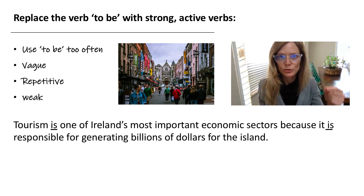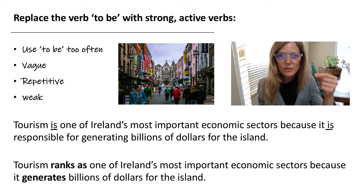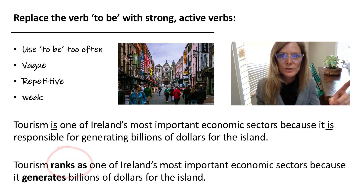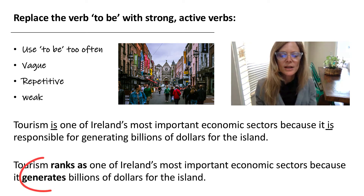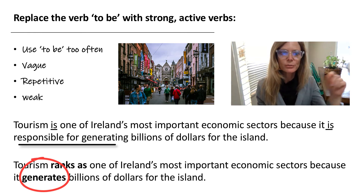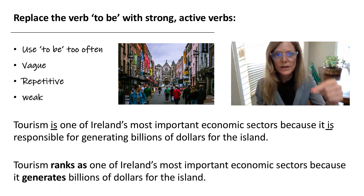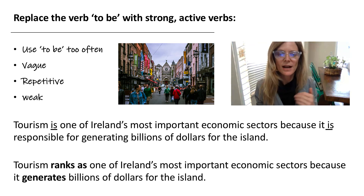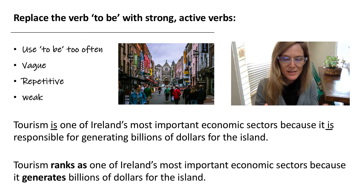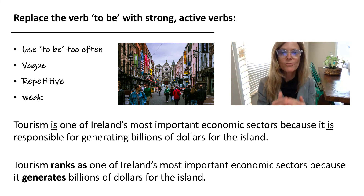Let's make this stronger. What we did with the first verb is we took it out and put 'ranks as': 'Tourism ranks as one of Ireland's most important economic sectors because it generates...' So instead of saying 'is responsible for generating,' which is kind of long and wordy, we just took that out and put one strong active verb: 'because it generates billions of dollars for the island.' You can see the second stronger sentence is actually shorter than the first weaker sentence using only the verb 'to be.'